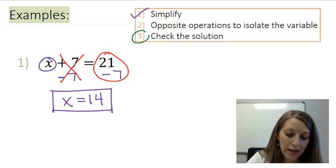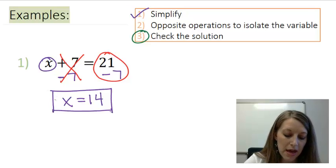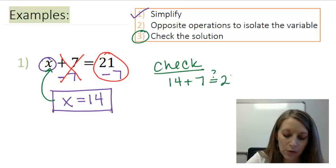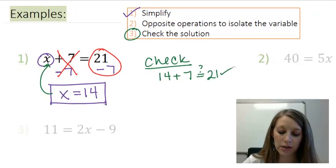Since I have my solution, I need to check and see if that's correct. And the way I check it is I just plug that number back into my variable. So my check here will look like 14 plus 7. Does that, in fact, equal 21? And, of course, it does, which means I have the correct solution.